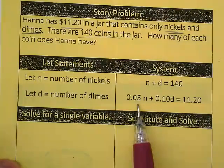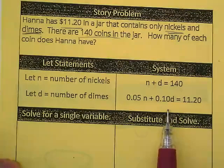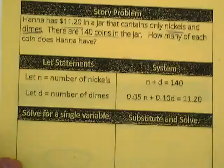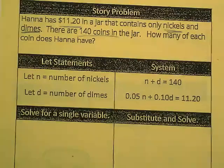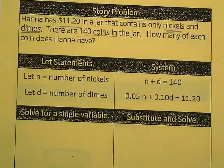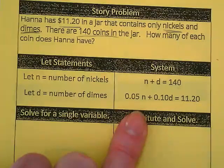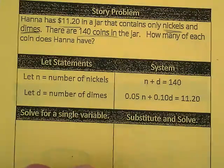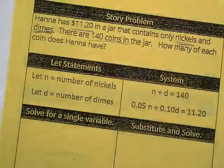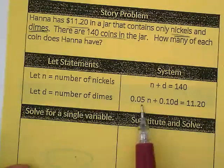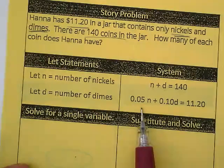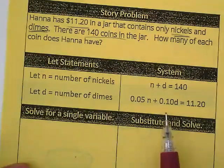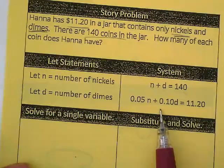I'd like you to look at the second equation. There's information here you have to know because you just live in the United States and there's information from the problem. What's the information that got put into this problem because we know this? 5 cents for nickels and 10 cents for dimes. What part of this came from the problem? The $11.20. This has to be written as 0.05 because it's a nickel and they're worth five cents. Which zero is important? The first one, just to make sure we don't lose the decimal as we're writing this.